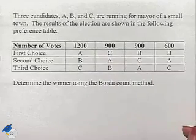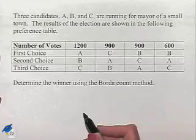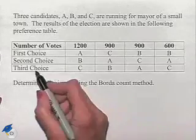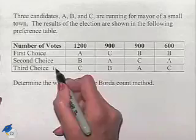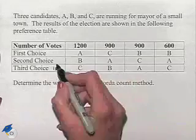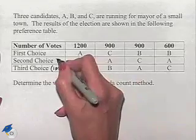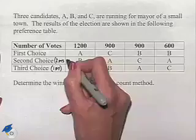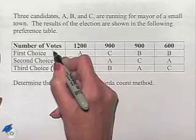To use the Borda count method, we're going to be tallying up points according to the choices. Third choice will receive one point, second choice will receive two points, and first choice will receive three points.